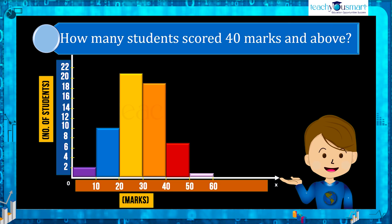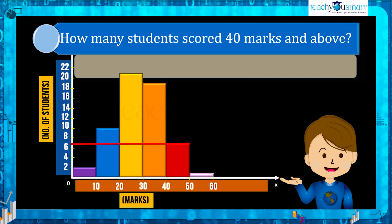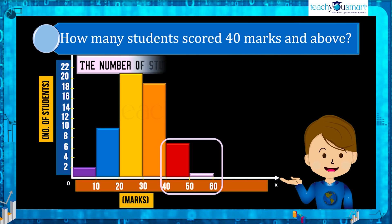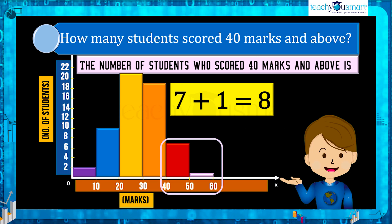Next question: how many students scored 40 marks and above? From the graph we can see that the number of students in the class interval 40 to 50 is 7, where 40 is included and 50 is excluded. In the class interval 50 to 60 the number of students is 1, where 50 is included and 60 is excluded. Therefore the number of students who scored 40 marks and above is 7 plus 1 equals 8.